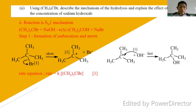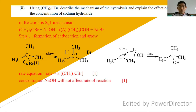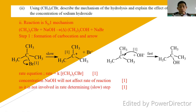You must write the rate equation because you need to explain the effect of increasing concentration of sodium hydroxide. The rate equation is: rate = k[C(CH3)3Br]. From the rate equation, you can see that OH⁻ is not involved in the rate-determining step. Therefore, the concentration of NaOH will not affect the rate of reaction, as it is not involved in the slow rate-determining step. This is how you answer the 8 marks for question one.